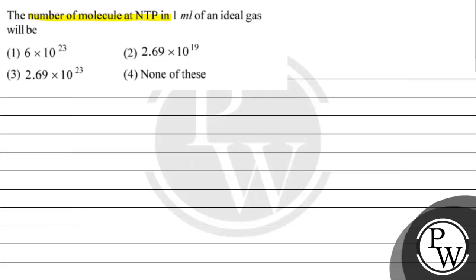The question says number of molecules at NTP in 1 ml of an ideal gas will be: option 1, 6 into 10 to the power of 23; option 2, 2.69 into 10 to the power of 19; option 3, 2.69 into 10 to the power of 23; option 4, none of these.